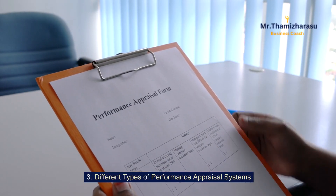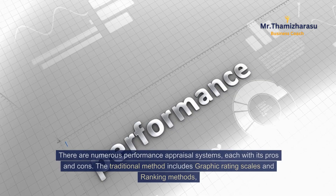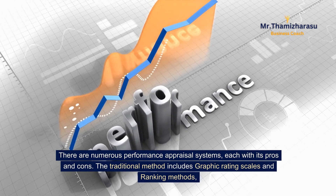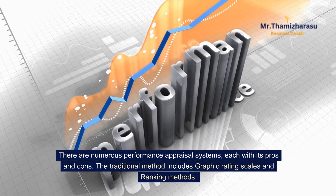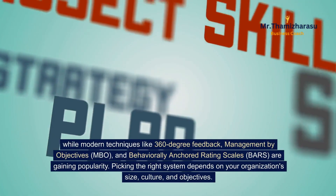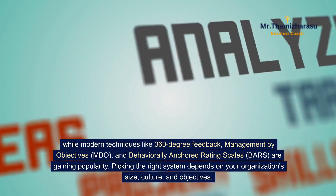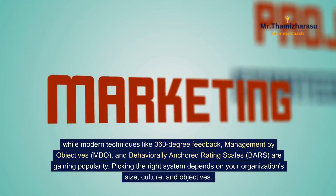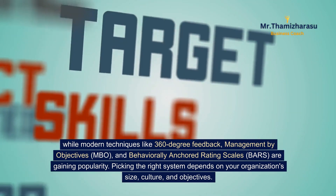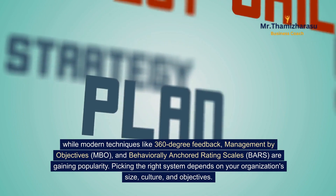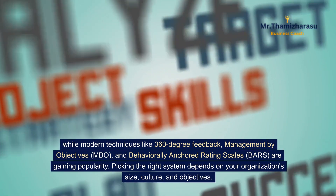Different Types of Performance Appraisal Systems: There are numerous performance appraisal systems, each with its pros and cons. The traditional method includes graphic rating scales and ranking methods, while modern techniques like 360-degree feedback, Management by Objectives (MBO), and Behaviorally Anchored Rating Scales (BARS) are gaining popularity. Picking the right system depends on your organization's size, culture, and objectives.